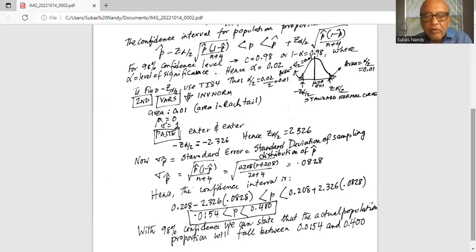With 98% confidence, we can state that the actual population proportion will fall between 0.0154 and 0.4.